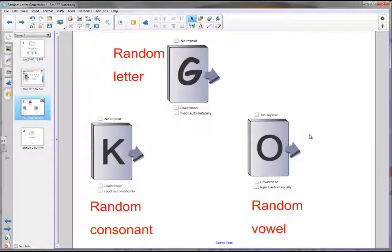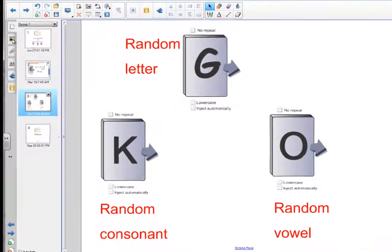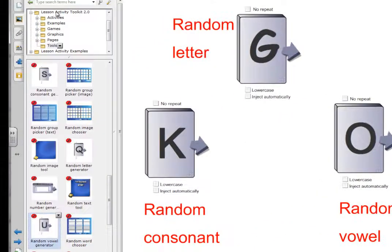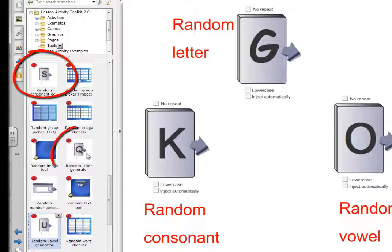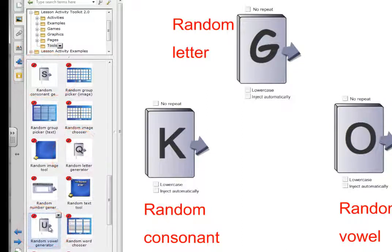Let's have a look at where we find the letter generators. If I click on the gallery tab and then click on Lesson Activity Toolkit and then click on Tools, you'll see there are three different ones: the random consonant generator, the random letter generator, and the random vowel generator. I simply need to double click or drag them in and they will appear on my page.